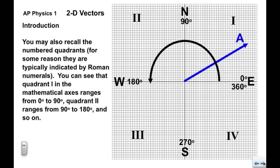You may also recall the numbered quadrants. For some reason they always use Roman numerals for these. One, two, three, four, and you'll note that they follow the mathematical axes system.